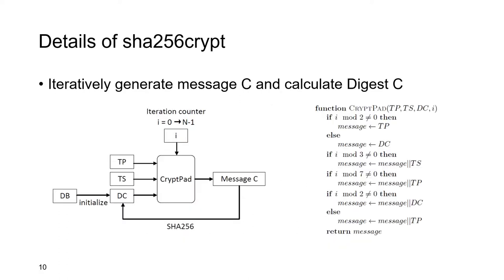The next step is to iteratively generate message C and calculate digest C. First, digest C is initialized with digest B. Then digest C, temp P, temp S, and iteration counter I are processed by the cryptpad function to generate message C. Next, we calculate the digest of message C and update digest C. After each round, the iteration counter I is increased by 1. If I equals N, the iteration is finished.